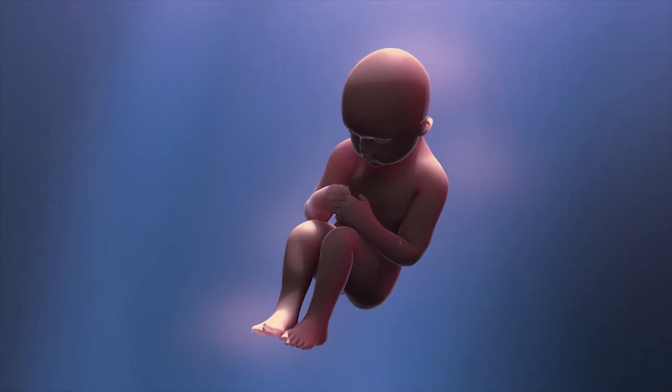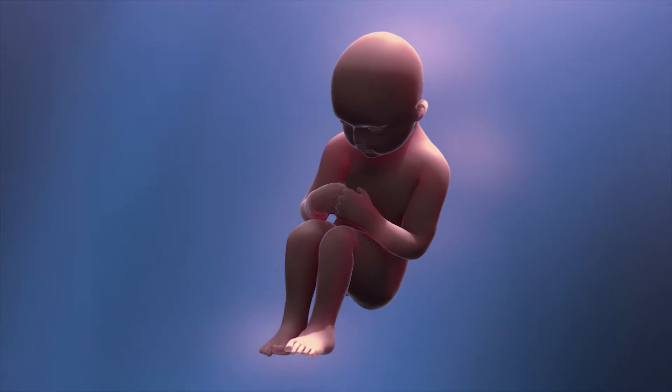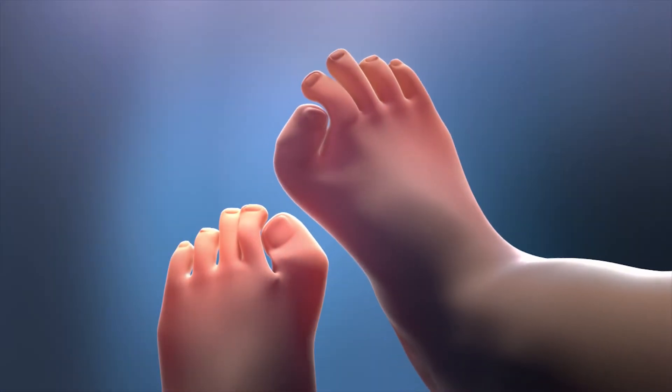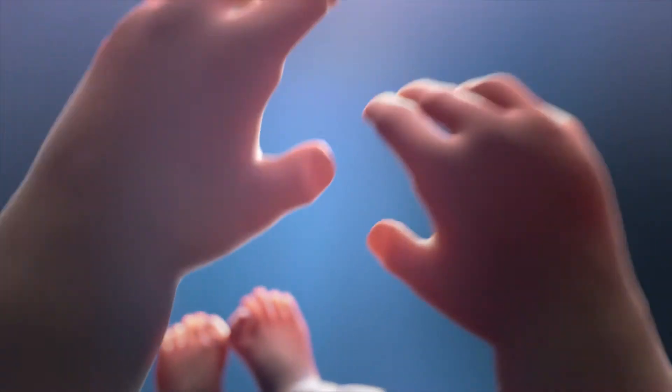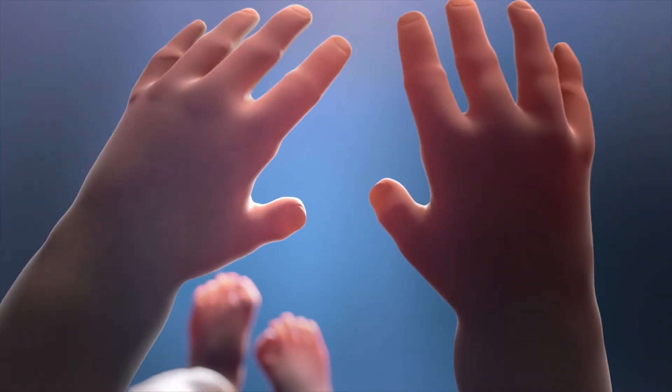Nearly all individuals with FOP are born with a hallmark malformation in which the big toes are shortened and bent inward, resembling a bunion. Shortened thumbs may also be present.